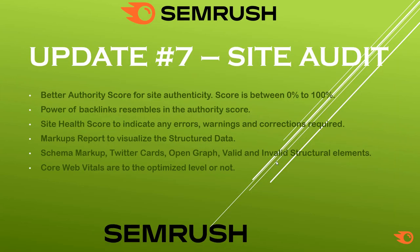Update number 7 is the Site Audit feature. You can see the Authority Score, which indicates the authority of the site and the power of backlinks. The Site Health Score and Toxic Score are related, indicating whether there are errors or warnings for the site. The Markups Report is another updated feature in Site Audit, along with Core Web Vitals.